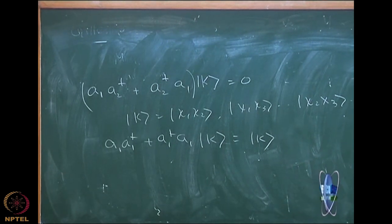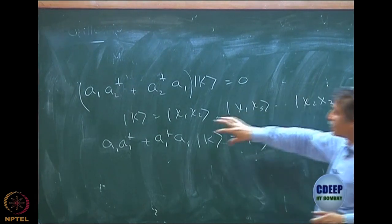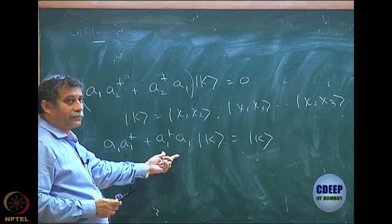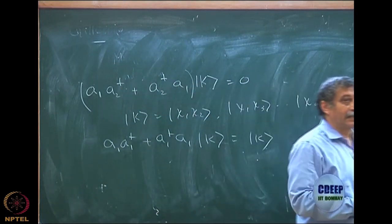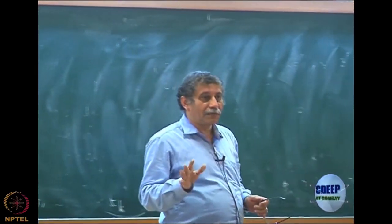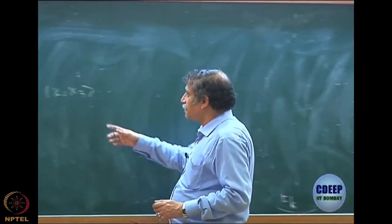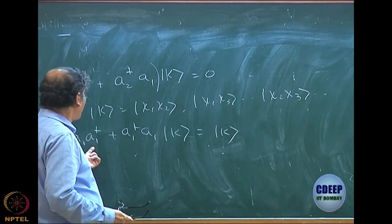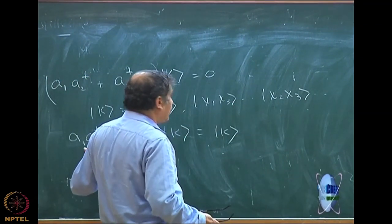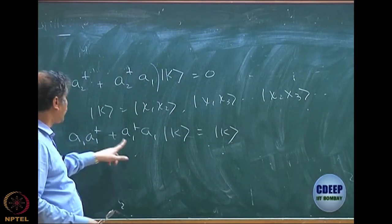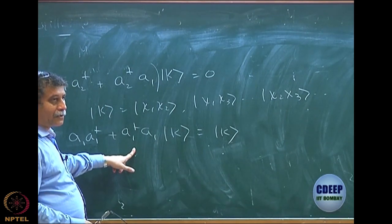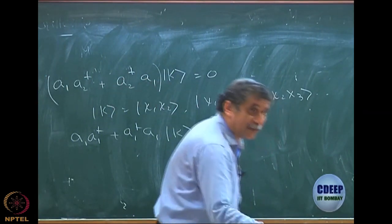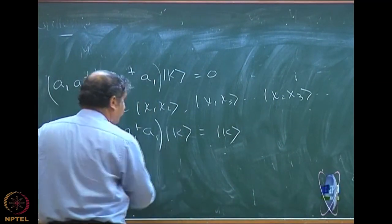First I create an n+1 electron state — although chi1 was not included, I first create chi1 chi2 chi3 then I destroy, so I get back chi2 chi3. One of them will survive depending on whether that particular orbital is absent or present. People sometimes get confused: if the determinant does not have these orbitals, how can this act? If the determinant does not contain chi1, it will first create and then annihilate, so you get back the same determinant. Remember, this is an anti-commutation — practice this so that you understand what anti-commutation properly means.